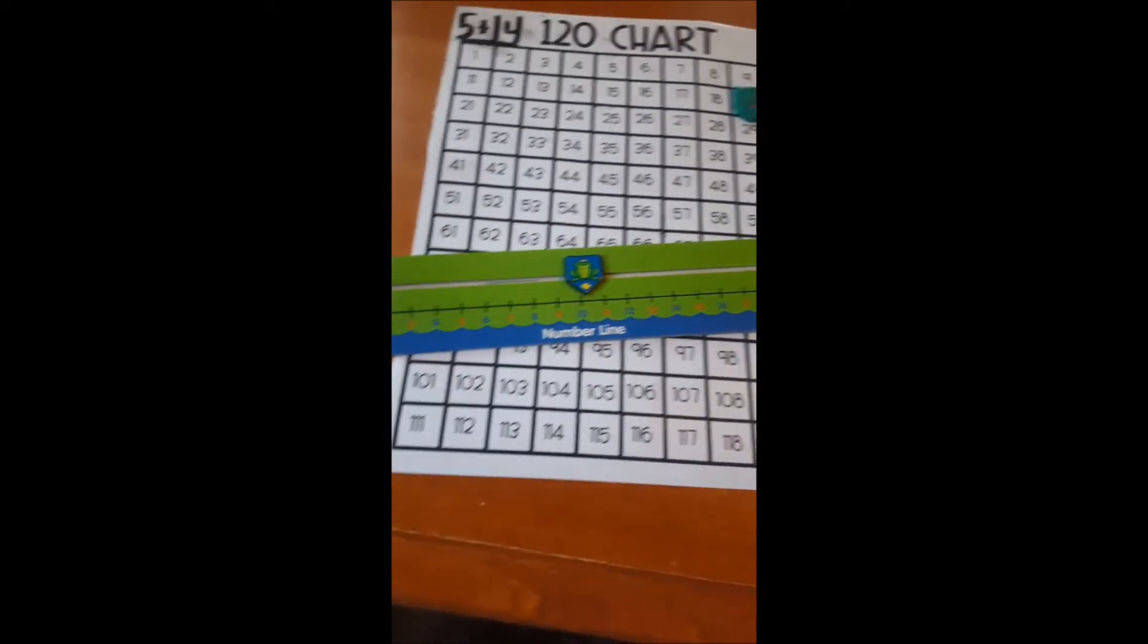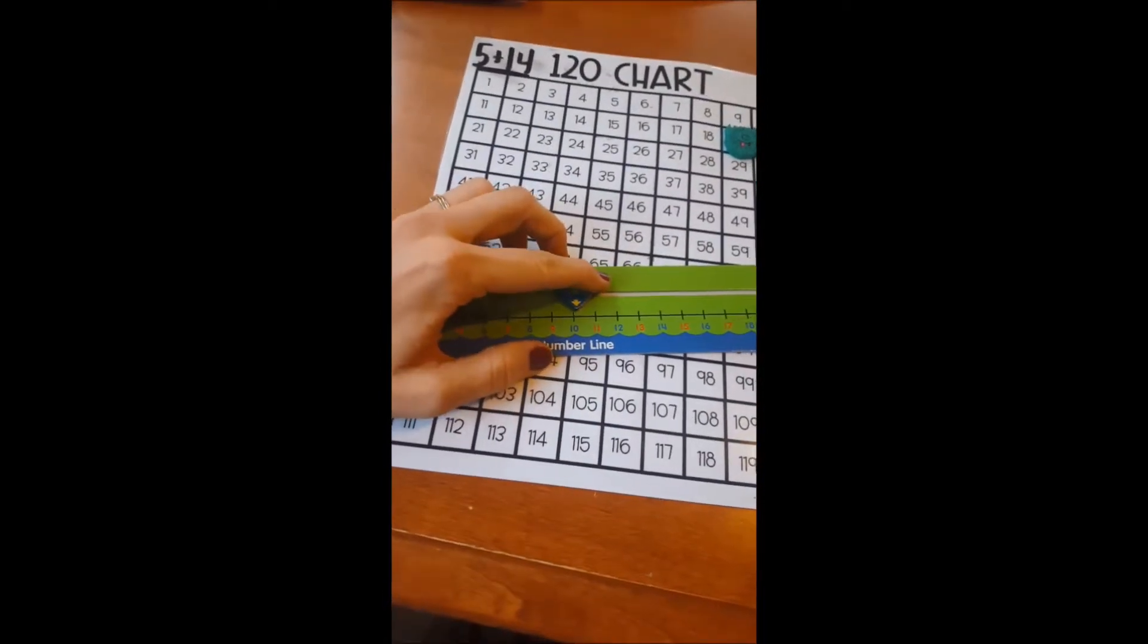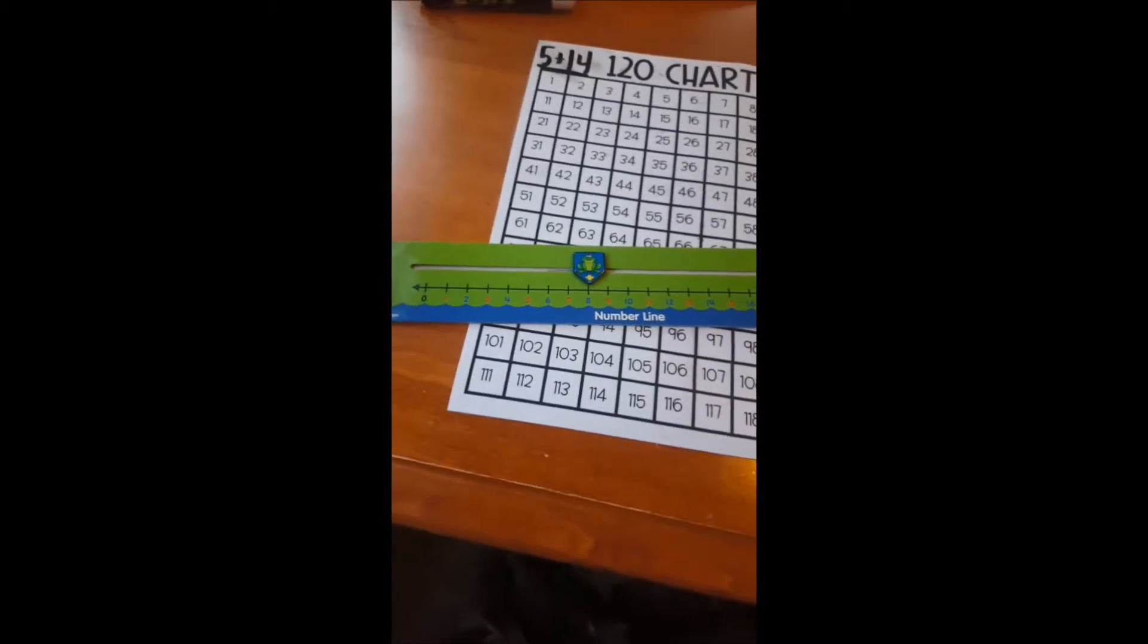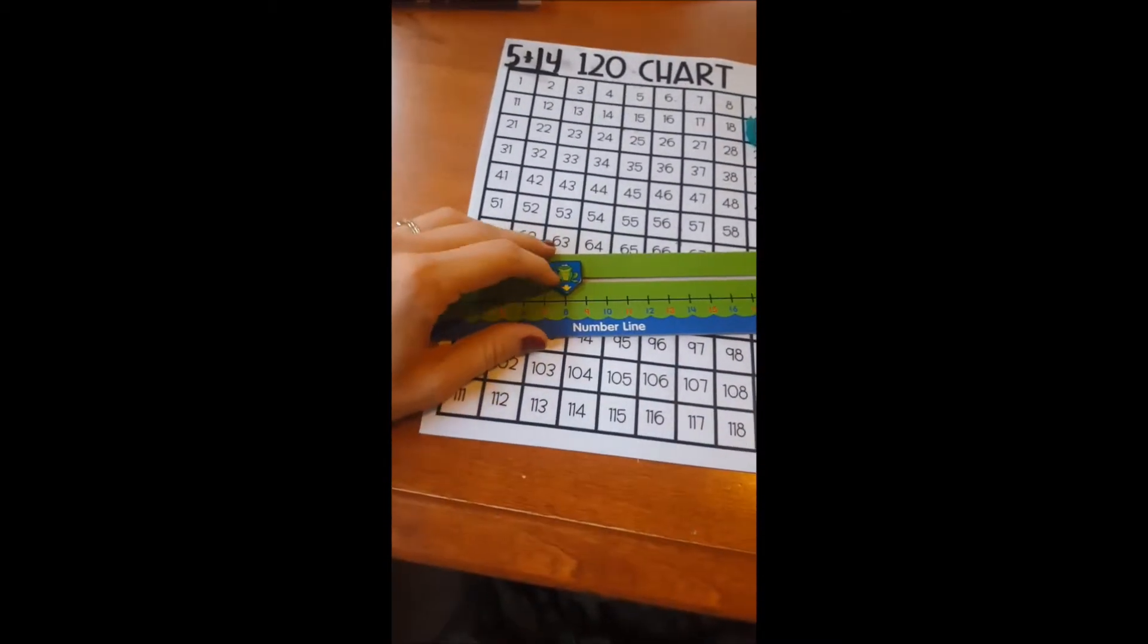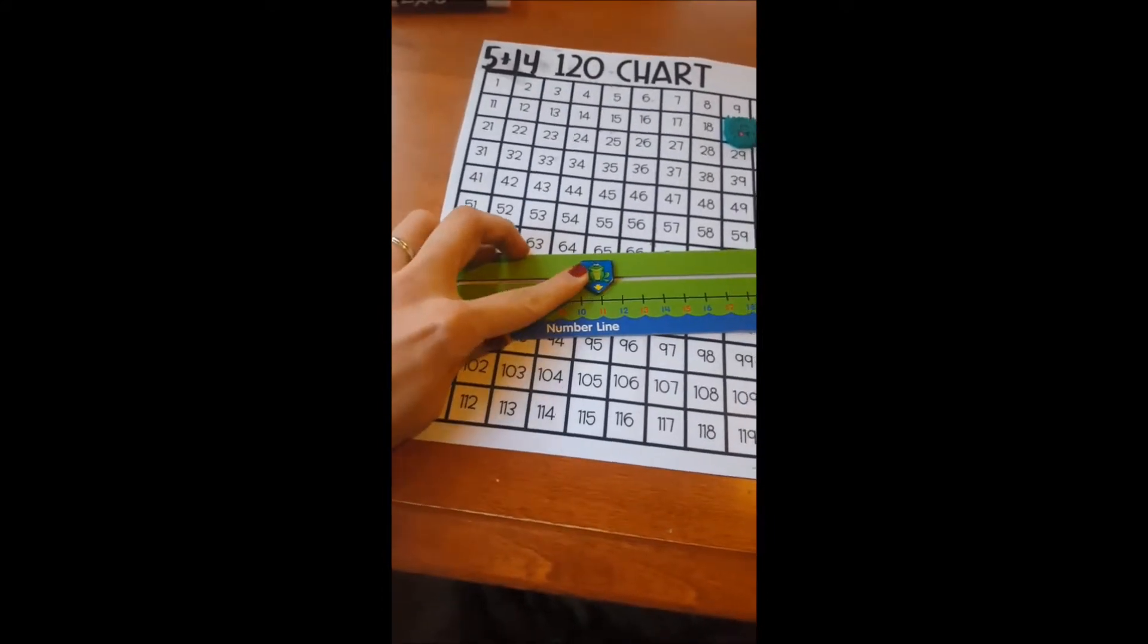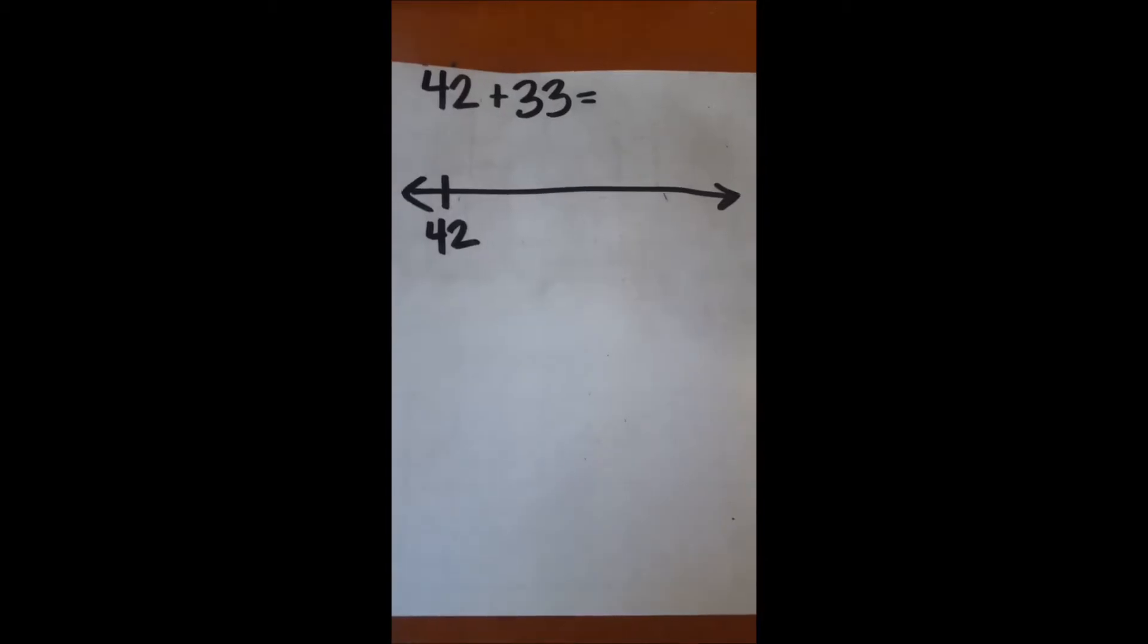We can also use a number line to help us count on. If we're doing, let's say, eight plus four, we'd start with eight and then count on four more: eight, nine, ten, eleven, twelve.